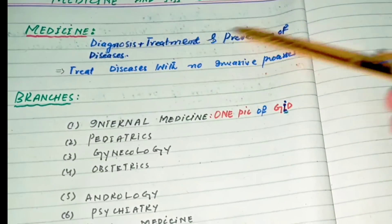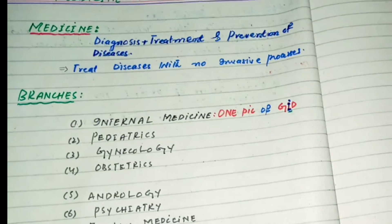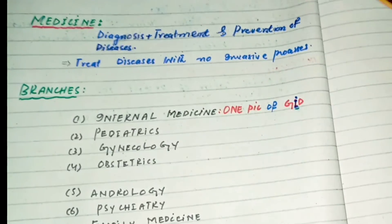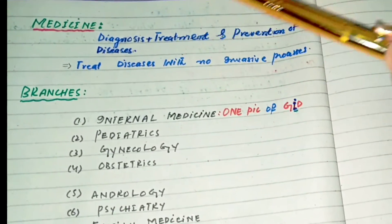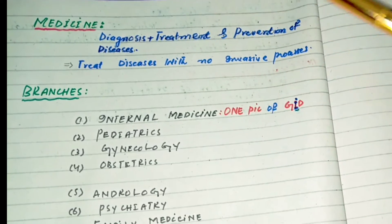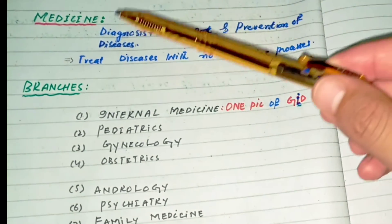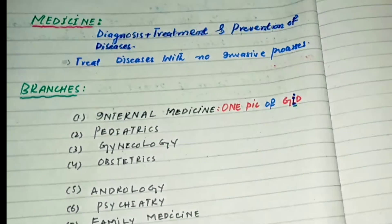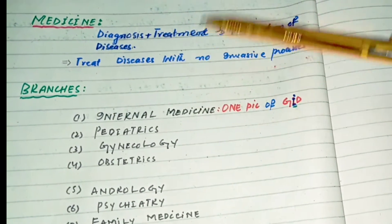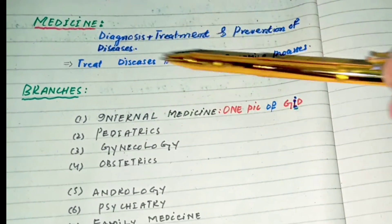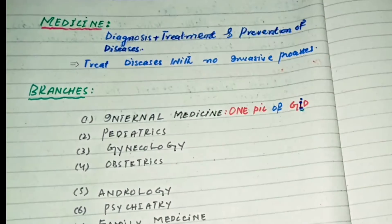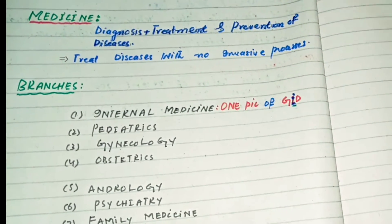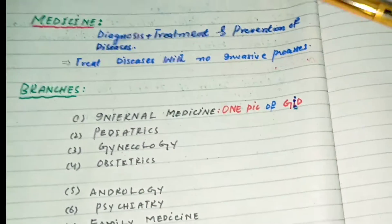In surgery, we treat the disease mainly by cutting and gaining access into the body cavity. But in medicine, there are no such invasive processes — we treat the disease by giving medicine to the patient. The branches of medicine are mainly ten.